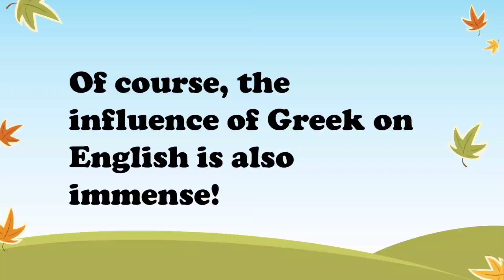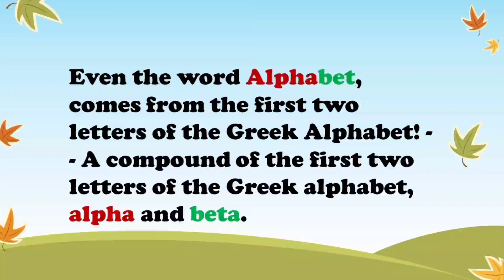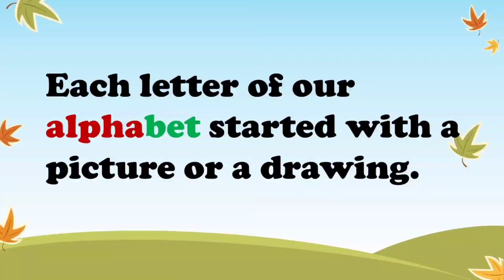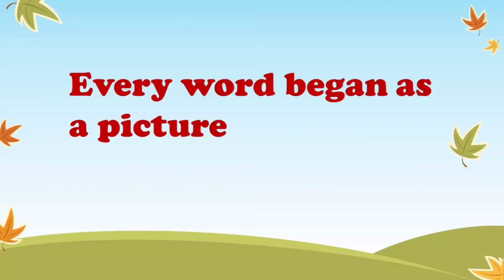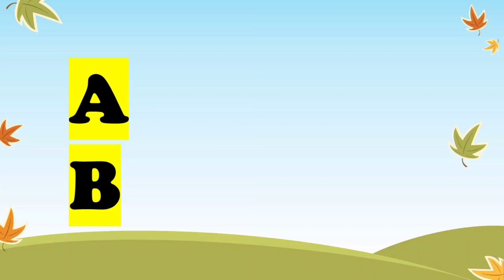Of course, the influence of Greek on English is also immense. Even the word alphabet comes from the first two letters of the Greek alphabet — a compound of the first two letters of the Greek alphabet, alpha and beta. Wilfred Funk says that each letter of the Greek alphabet started with a picture or a drawing. Every word began as a picture. So now the question, yet again — why is A the first letter of the alphabet, and B the second letter, and C the third letter?